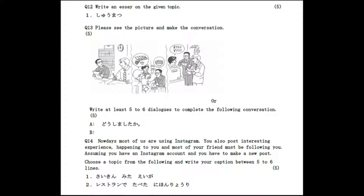The twelfth question is: write an essay on the topic 'Shuumatsu' (weekend — Saturday and Sunday). I will leave this question to you, so please think about what you did on Saturday and Sunday and put it in simple words. The thirteenth question is: look at the picture and make a conversation. Hints: the clock shows 12 noon so it is lunch time, two people are ordering food in a restaurant, and then it is time to pay the bill. In most cases Japanese people go Dutch — this is called warikan. You can use this word in your conversation.